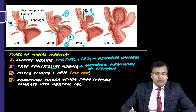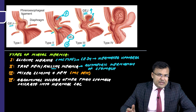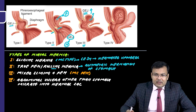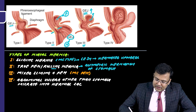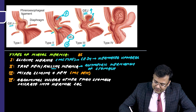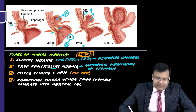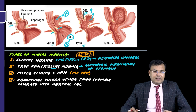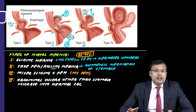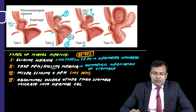For what percentage of cases is Type 1 responsible? Type 1 is responsible for 85 to 95 percent of all hiatal hernia cases. So overall, in 85 to 95 percent of hiatal hernia cases, it is Type 1.